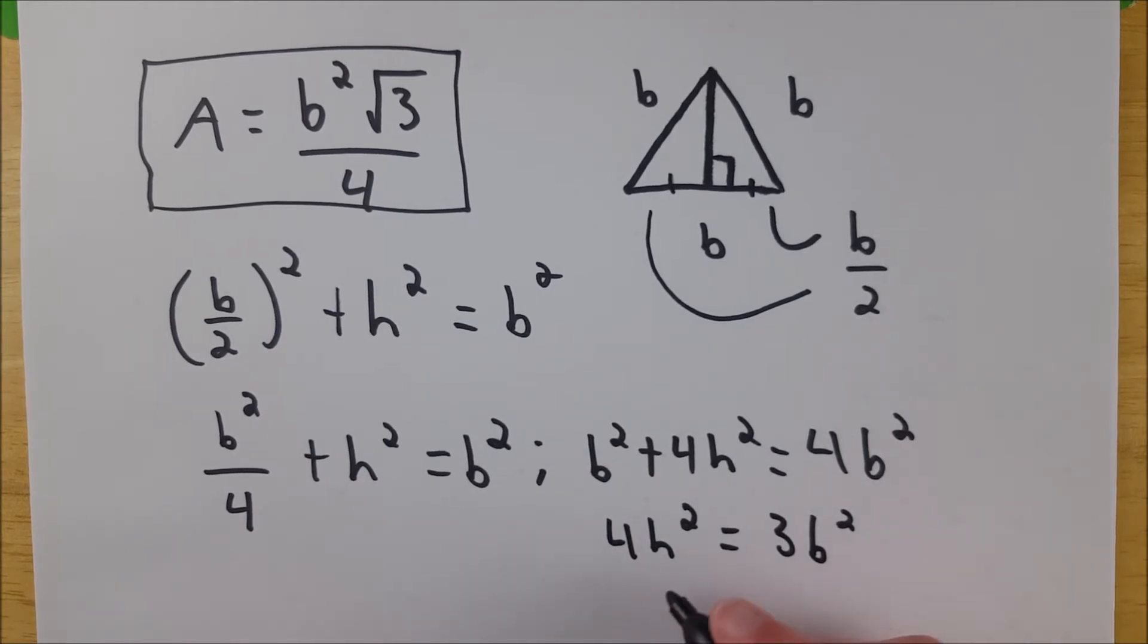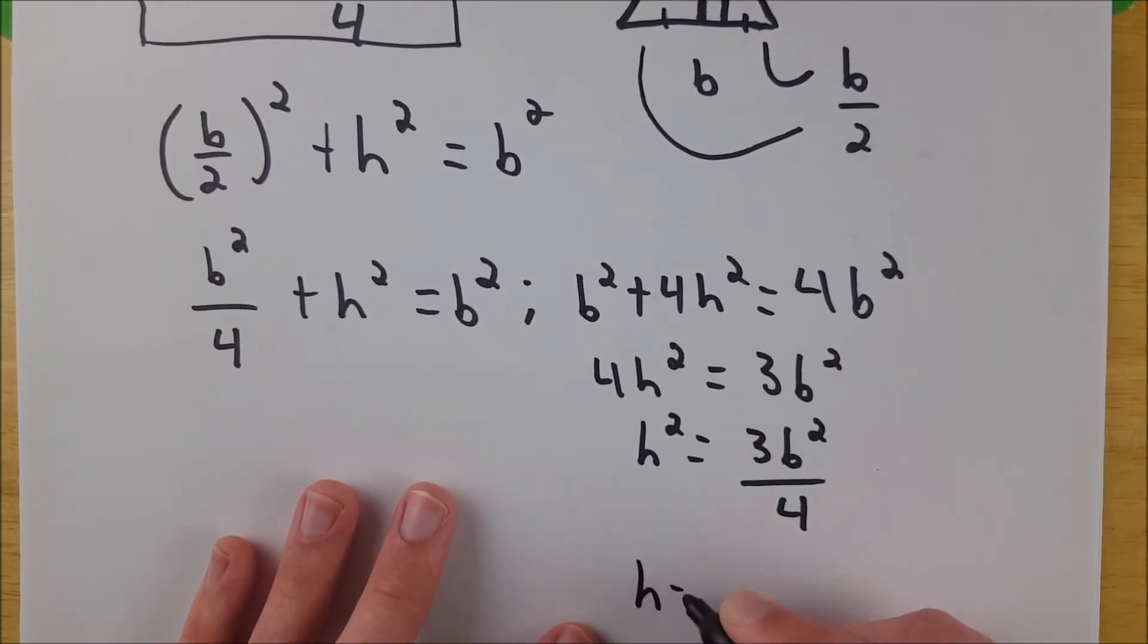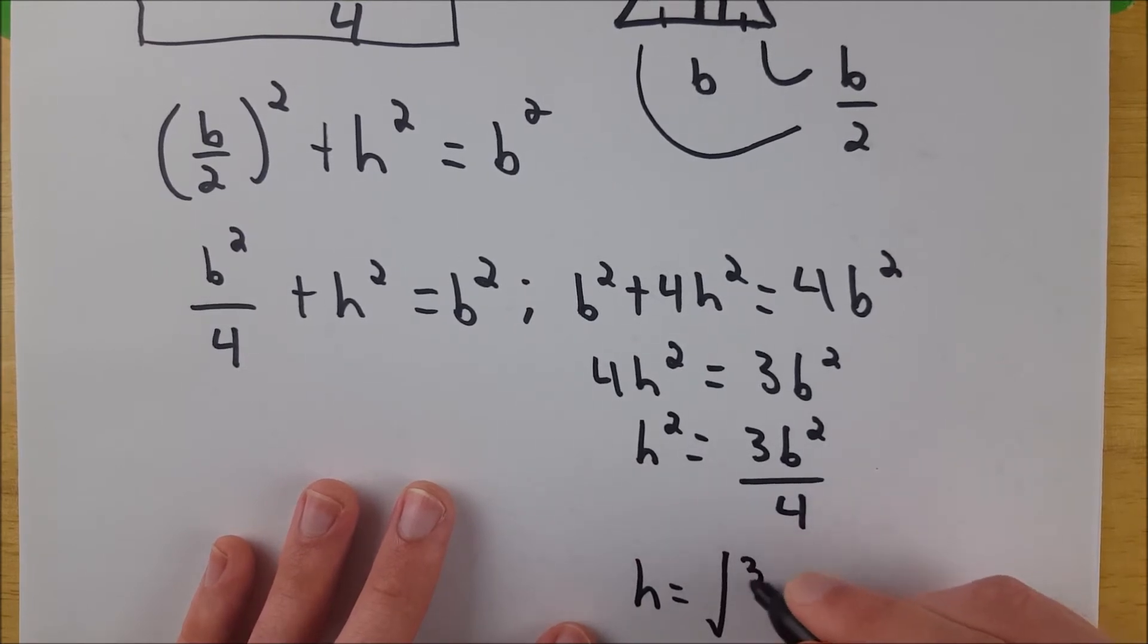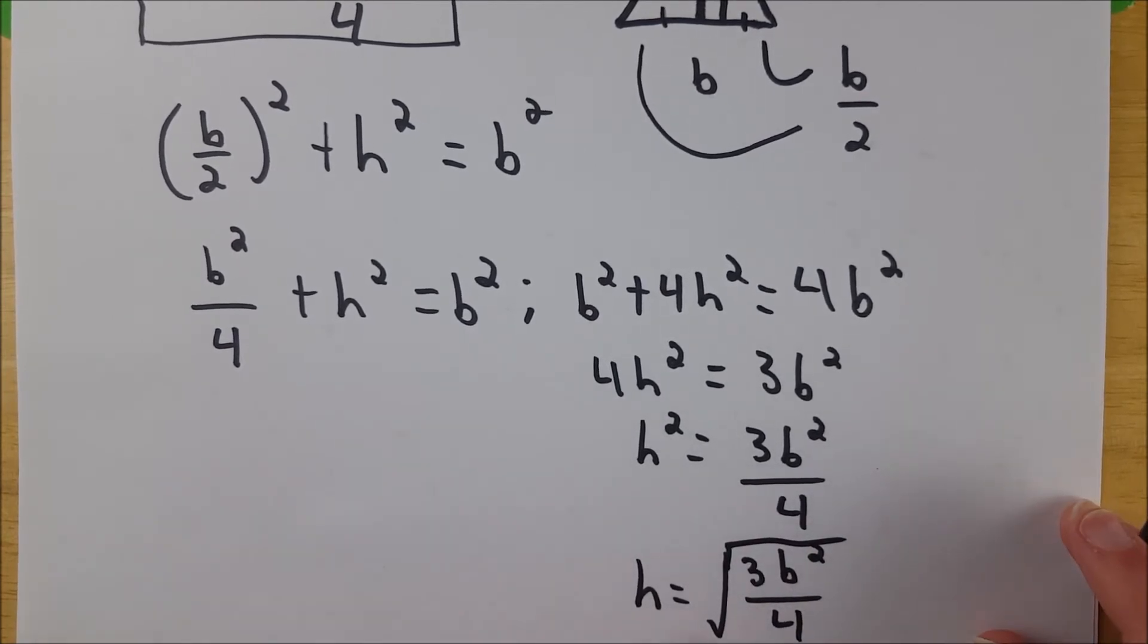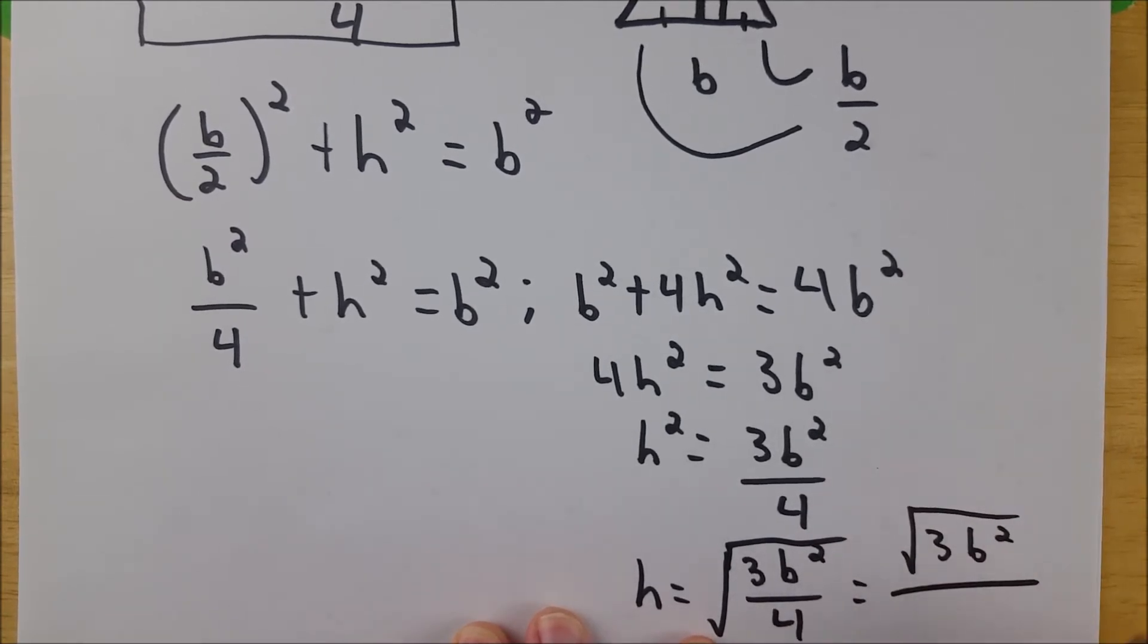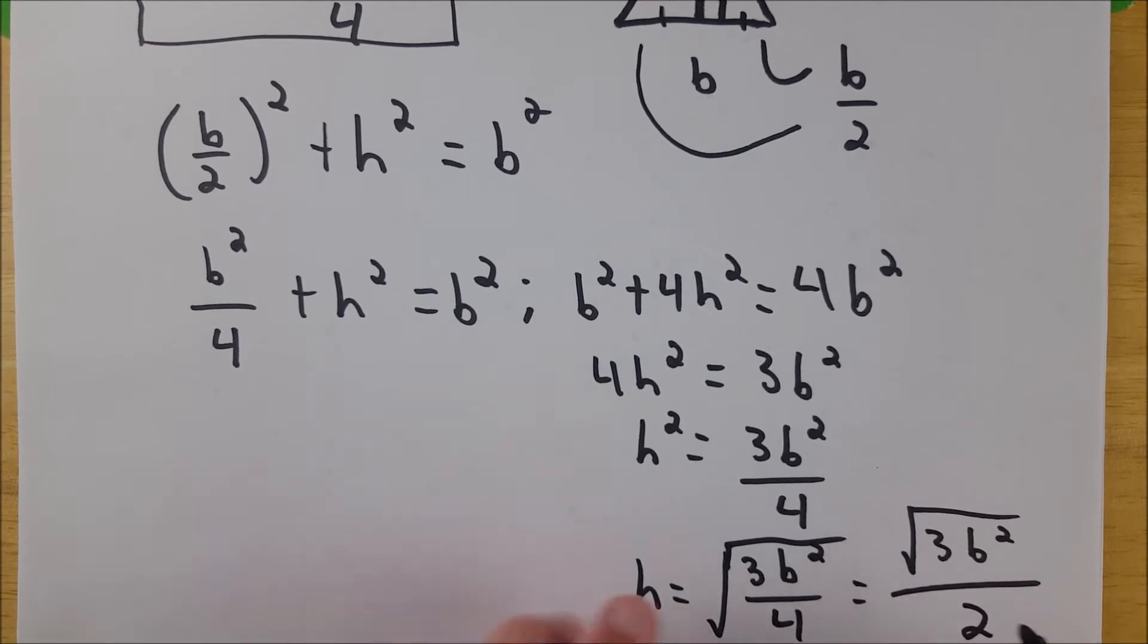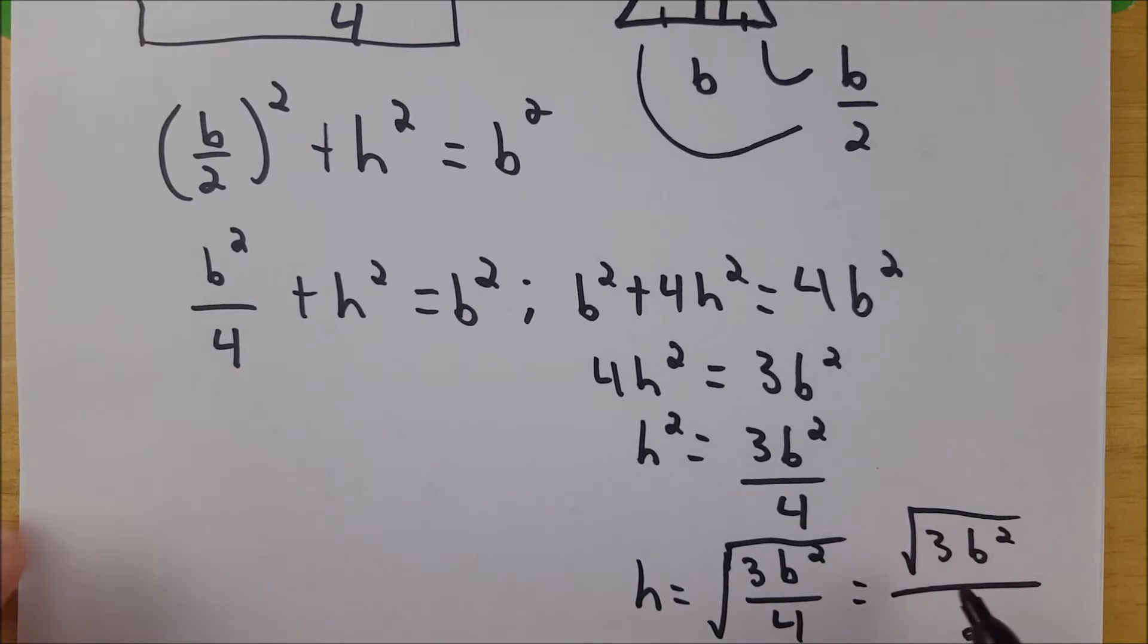And then we just have to divide by 4. So we have h squared equals 3b squared over 4. And then, I'll push this up a little bit. Then we just have to take the square root of both sides, and we've solved for h. So we get h equals the square root of 3b squared divided by 4, like that. So now we can rewrite this as the square root of 3b squared divided by the square root of 4, which is 2. So we can just write that as 2. And then from here, we can simplify this further by taking the b squared out as b. Because we could rewrite this as root 3 multiplied by the root of b squared. The root of b squared is b. So we can rewrite this.